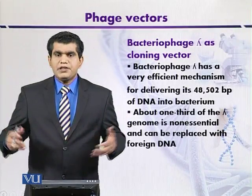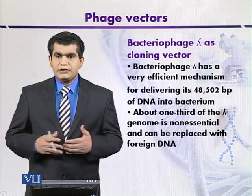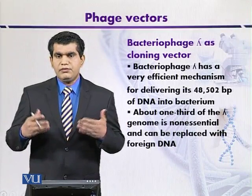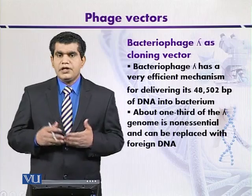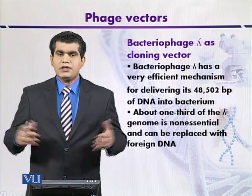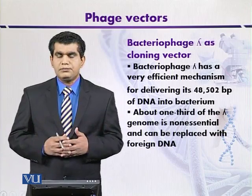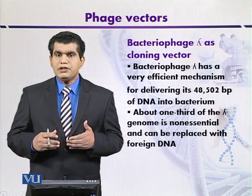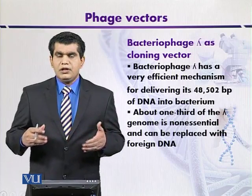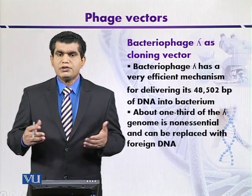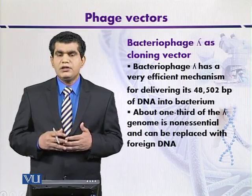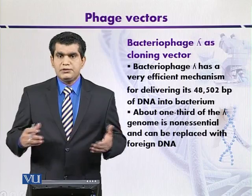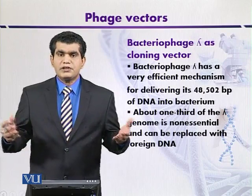Now we discuss bacterial plasmids as cloning vectors. We are going to focus on phage vectors in the next topic, especially the use of bacteriophage lambda as a cloning vector. Bacteriophages are viruses that have the ability to infect bacteria like E. coli. Because they have the ability to infect E. coli, they are also called coliphages, and one famous example is bacteriophage lambda.